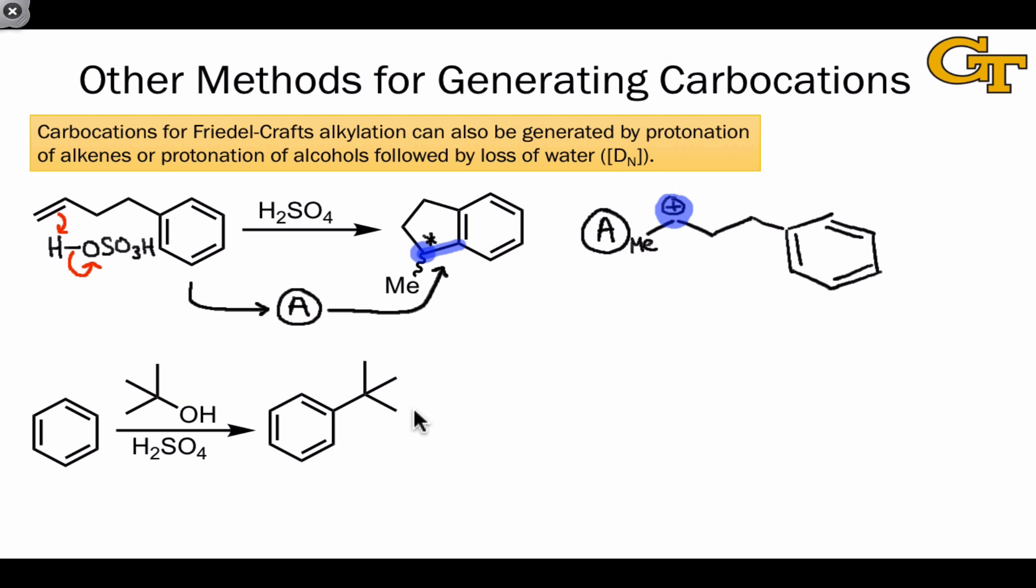Carbocations can also be generated from alcohols through proton-mediated processes again. Under these reaction conditions, we should expect the strong acid H2SO4 to protonate the alcohol. Doing this leaves us with an intermediate that's poised to form a carbocation through the loss of water.